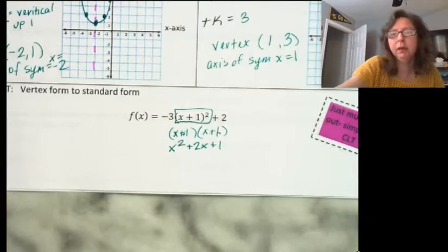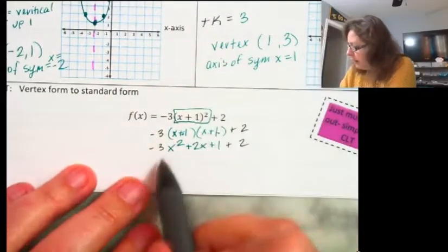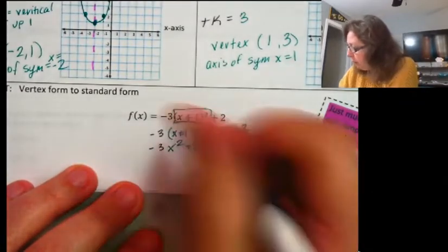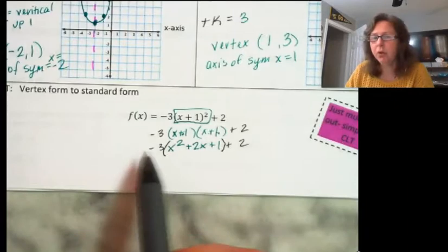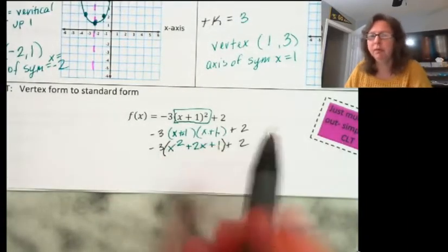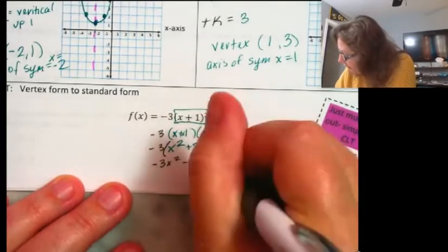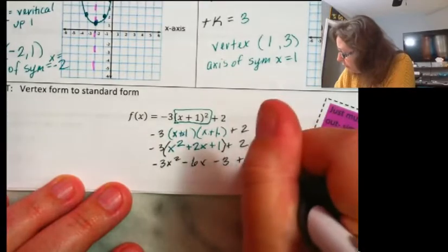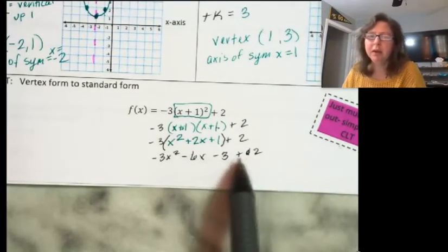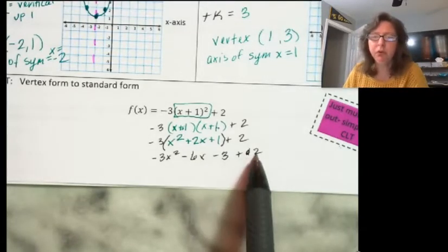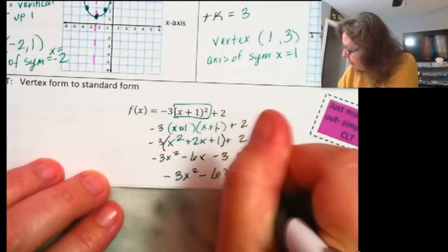Using the distributive property: x times x, 1x and 1x gives me 2x's, and 1 times 1 is 1. Now the negative 3 was outside the parentheses, so I need to distribute it in everywhere: negative 3x squared, negative 6x, negative 3 — and bring down the plus 2. Now combining like terms: negative 3 plus 2 is negative 1. So the final answer is negative 3x squared minus 6x minus 1.